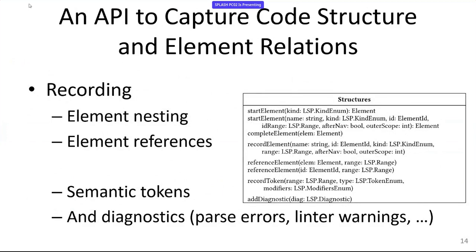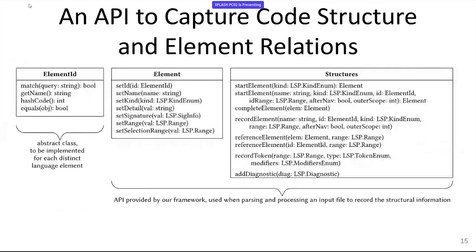For the actual recording of structural information, we have basic operations: start an element, complete an element, or record it in one go, for instance just a variable definition. Of course we want to reference elements — if I read a variable or call a function, that kind of stuff. For semantic highlighting we have the recording of tokens. And if something goes wrong during parsing, or if you have some semantic analysis or linting support in your parser, you can record any kind of diagnostic. The goal was to reduce the effort for implementing language servers, reflected in this small API.